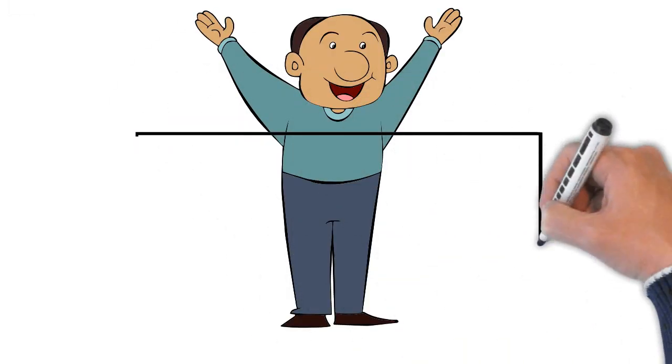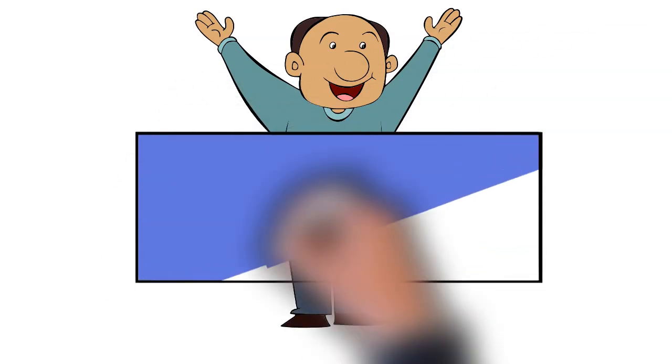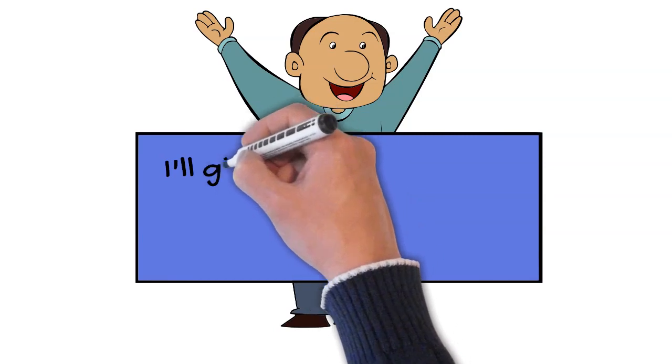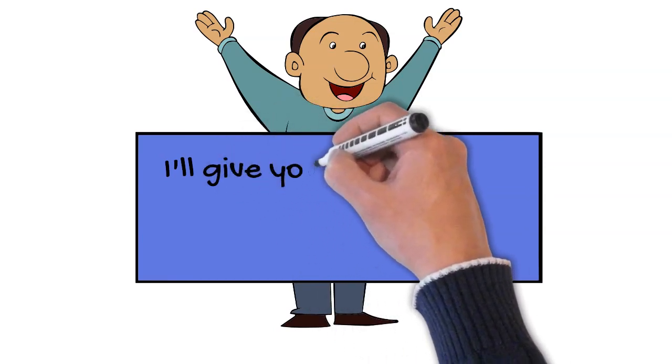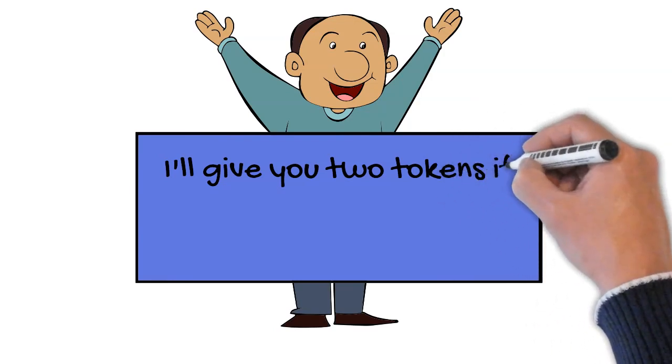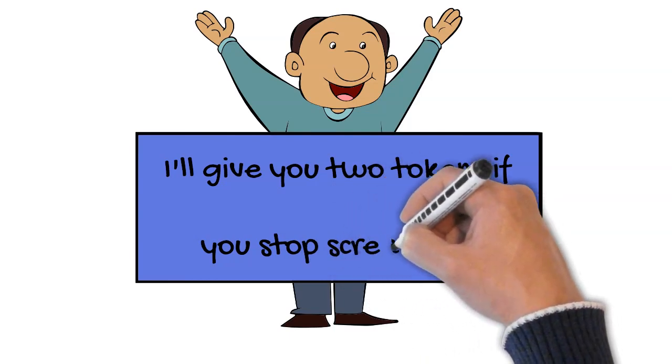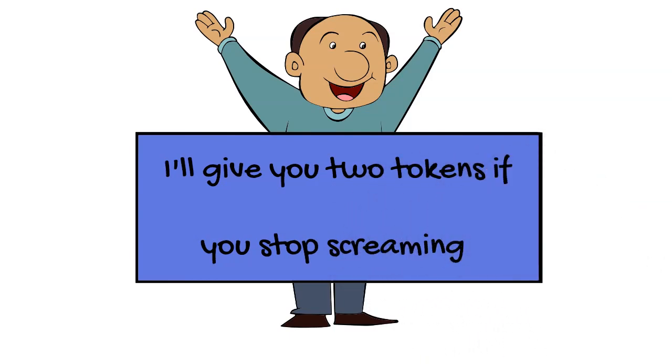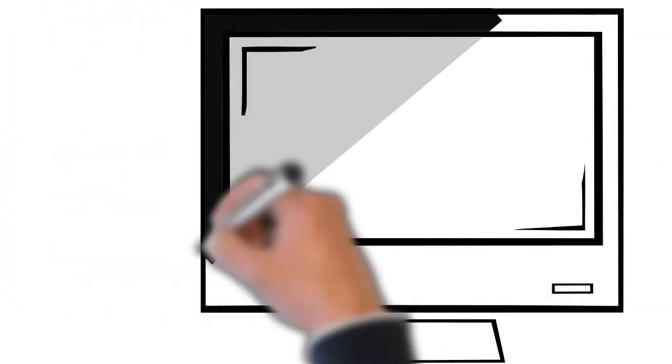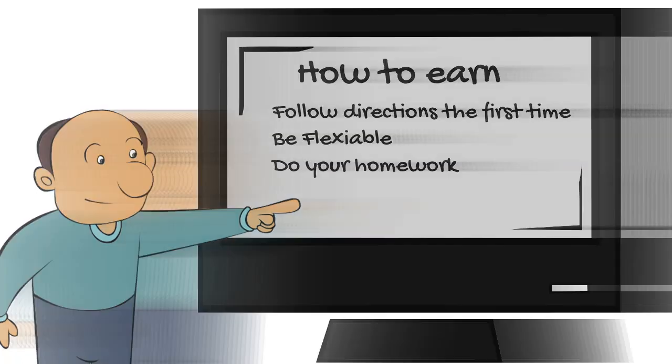Another common mistake that I run into is that parents will weaponize these tokens by not clearly defining desired behaviors or responses in which you're looking for to determine how they're going to earn those tokens. Then the tokens are used more as a bribe, like, oh, if you stop this, then I'll give you a token. That's not the way we want to use tokens to change behavior. To set your child up for success, what we want to do is ensure that they know what they're expected to do and that they're capable of achieving those tokens and rewards.